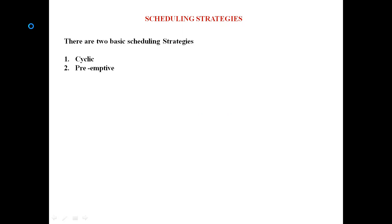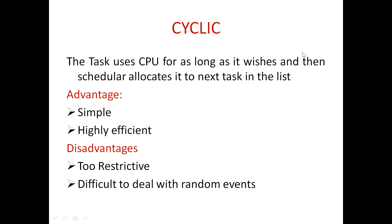You can see in this line that they are cyclic and preemptive. The first one is cyclic. In this strategy, the CPU is allocated to a task — for example, task one. The CPU is allocated for task one unless and until task one completely uses the CPU, then only the CPU will be allocated to the next task. That means the scheduler will allocate the CPU to the next task unless and until the assigned task no longer requires the CPU.